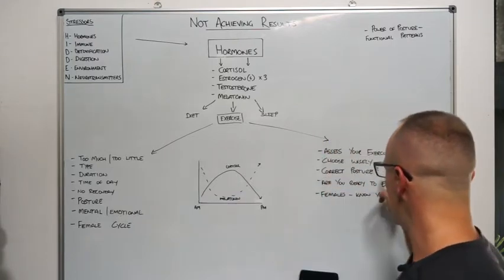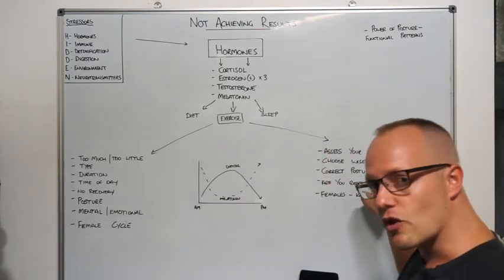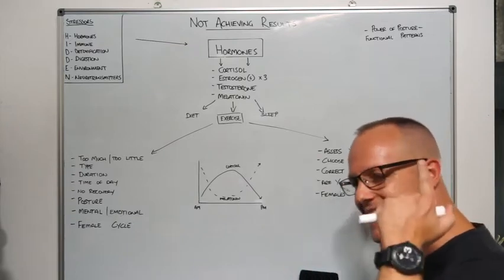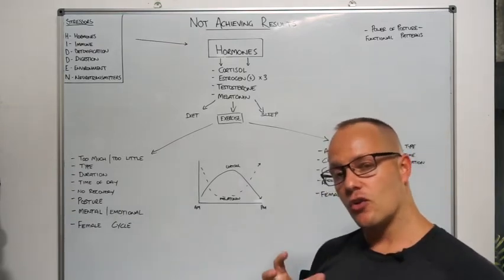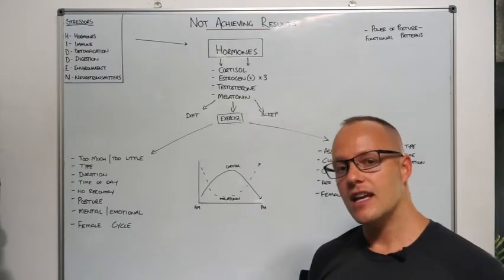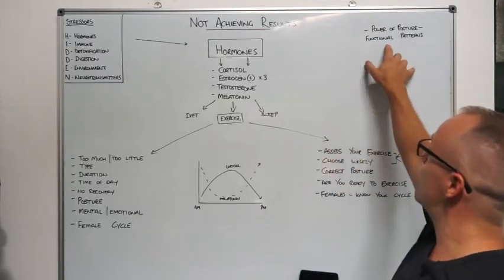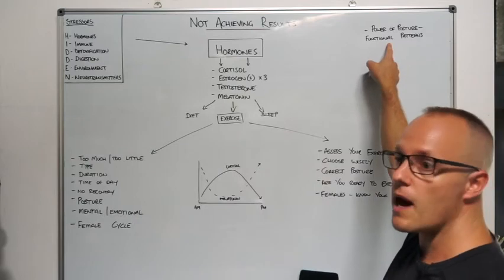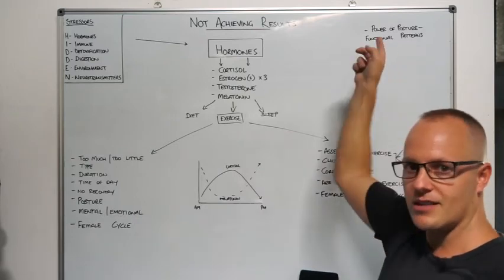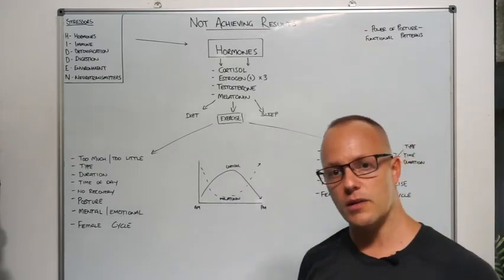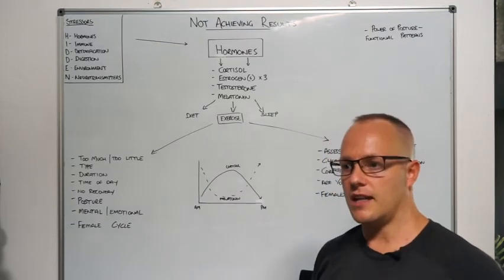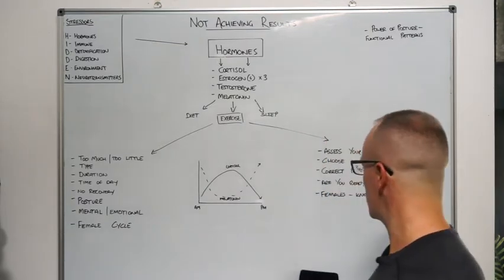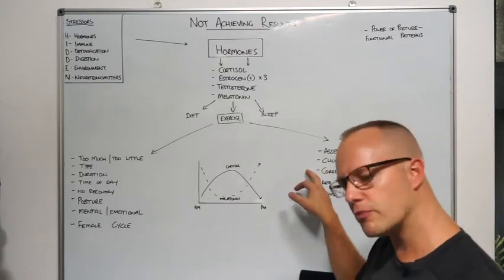Correct your posture should be number one. Core functioning and correct and posture building is at the top. We recommend a book called Power of Posture by Functional Patterns - great breakdown of understanding how true posture should be and gives you some tips on how to improve that. It's something we do here with pretty much everyone. That should be at the top of your list.